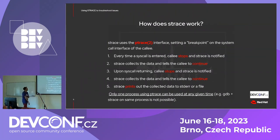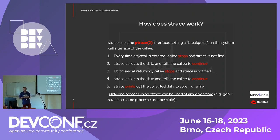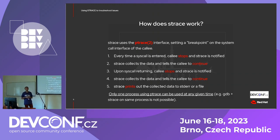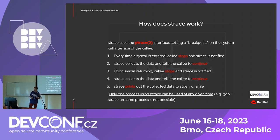So how does strace work? Strace uses the ptrace interface internally, which somehow sets a breakpoint on the process you are monitoring — what we call the tracee. Every time a syscall is entered, the tracee stops, and strace gets a notification. Strace collects the data it wants to record, tells the tracee to continue, the syscall happens in the kernel. Upon returning, the tracee stops again, strace collects the rest of the data — for example the number of bytes written to the filesystem — and strace prints it back to standard error or usually to a file.